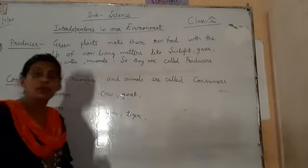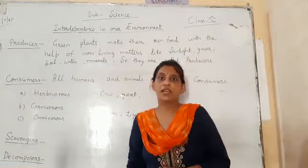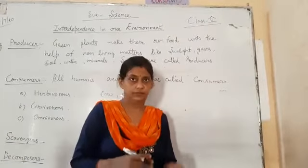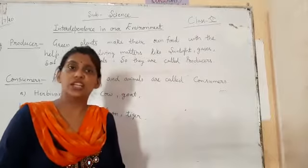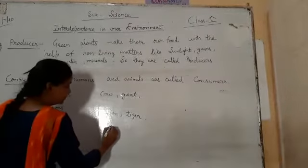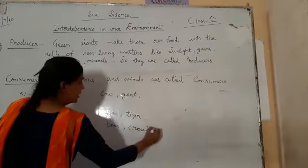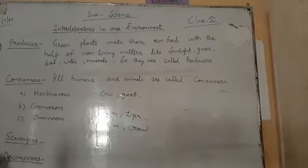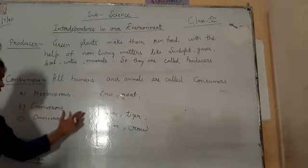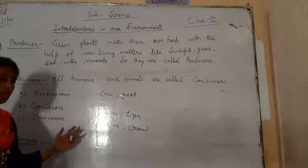Third is omnivores. Omnivores कौन से होते हैं? जो plants भी खाते हैं और flesh भी खाते हैं. जरूरत पड़े तो वो plants भी खा सकते हैं और अगर जरूरत पड़े तो flesh भी खा सकते हैं. इनमें कौन से आते हैं? जैसे की bear, and so on. तो herbivores कौन से होंगे जो सिर्फ plants खाते हैं, carnivores कौन से होंगे जो flesh खाते हैं, omnivores कौन से होंगे जो दोनों चीज़ें खाते हैं.